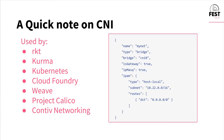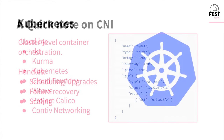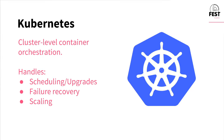Kubernetes is cluster-level container orchestration. You install it on all your nodes, and you can tell it to run three instances of a web app, and it'll pick three nodes and run the web apps on them. It can also handle failure recovery — if one of the nodes that had a scheduled app just goes up in flames, it can pick another node and push the app over there.